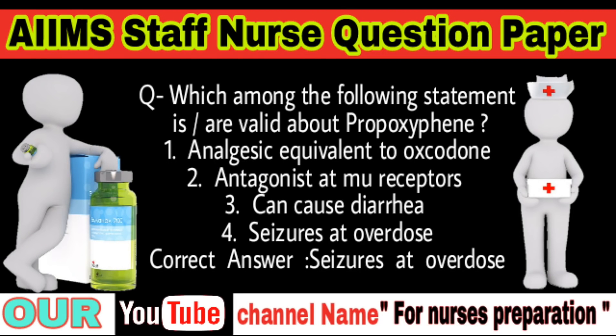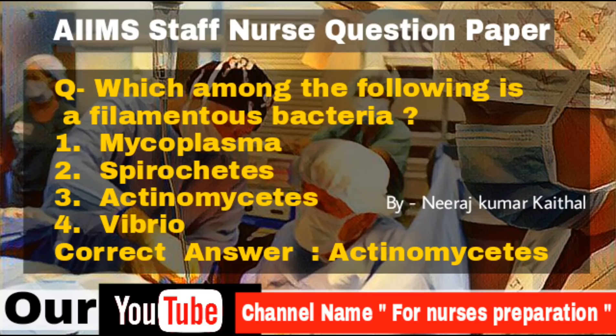Question: Which among the following statements is valid about propoxyphene? Options: Analgesic equivalent to oxycodone, antagonist at mu receptors, can cause diarrhea, seizures at overdose. Correct answer is seizures at overdose. Question: Which among the following is a filamentous bacteria? Options: Mycoplasma, spirochetes, actinomycetes, vibrio. Correct answer is actinomycetes.